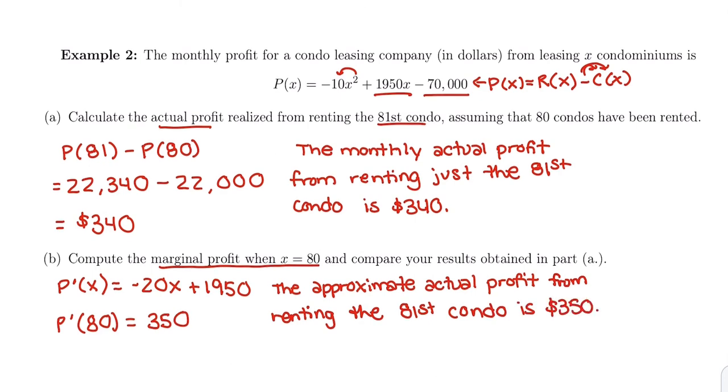We just said that the monthly profit is actually $340 for our actual profit, and then marginal approximates actual so we're getting $350 each month with our approximation. Is that a huge deal? Not really. They're making over $22,000 a month right now.